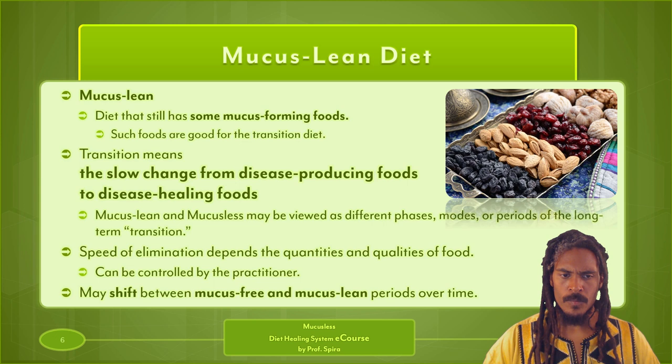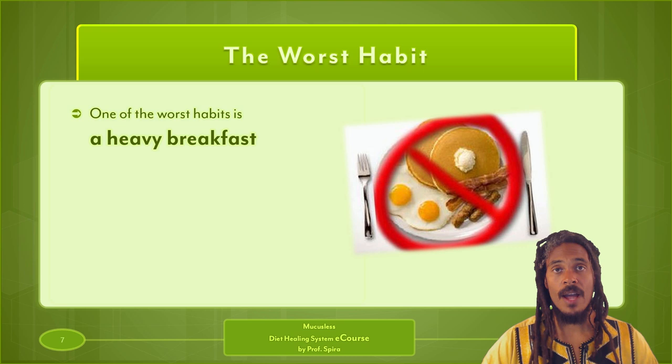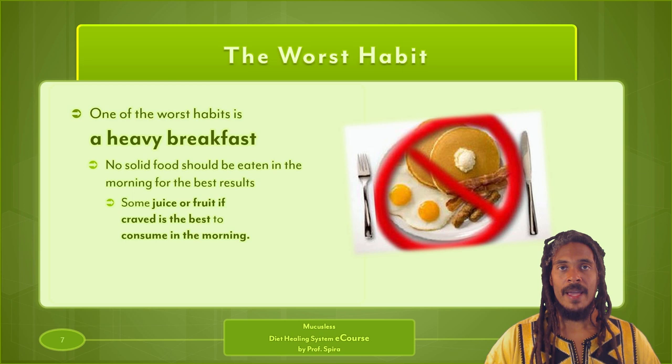According to Ehret, the worst habit of all time is eating a heavy breakfast. Ehret says no solid food should be eaten in the morning for best results — some juice or fruit if craved is the best to consume in the morning. This was fairly easy for me to adopt early in my transition.